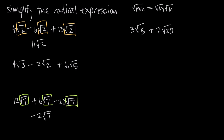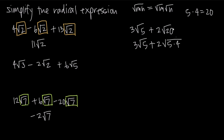Looking at 3 times the square root of 5, plus 2 times the square root of 20 — I see radical addition with different radicands: square root of 5 and square root of 20. I might be tempted to say I can't simplify it, but we can use the rule where square root of m times n breaks into two square roots. 20 is the same as 5 times 4, so I rewrite this as 3 times the square root of 5 plus 2 times the square root of 5 times 4. Then I break that apart: square root of 5 times the square root of 4.